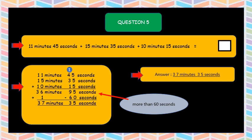But that is not the actual answer. Look at the seconds. 95 seconds is more than 60 seconds. So what do you want to do? That's good. You must minus 60. Then you plus 1 for the minutes. 95 minus 60 equal to 35 seconds. Then 36 minutes plus 1 equal to 37 minutes. So the answer is 37 minutes and 35 seconds.